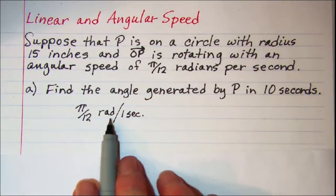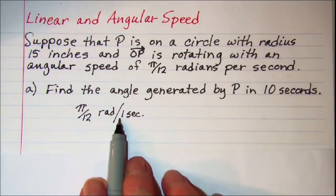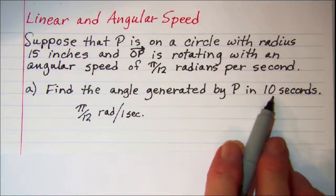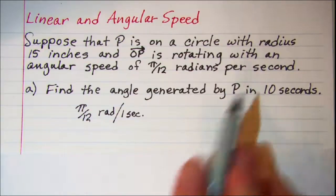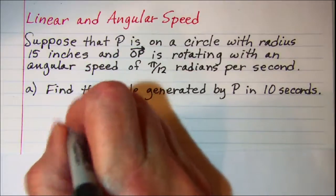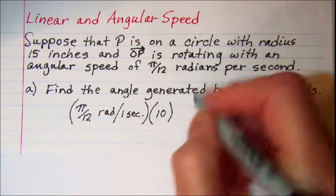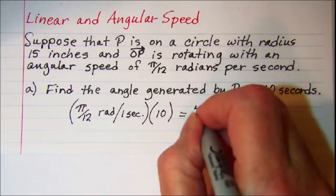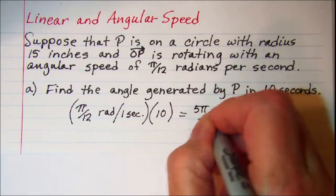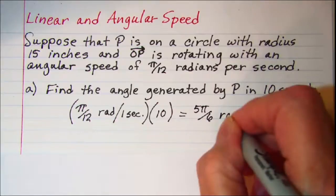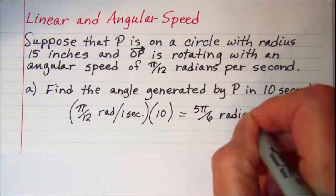All we need to do is take that speed and multiply by 10 to find out the angle that's generated in 10 seconds. So let's do that, multiply that by 10 and we get 5π over 6 radians in 10 seconds.